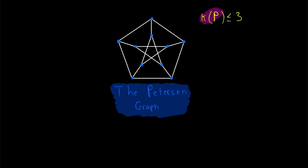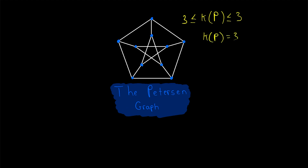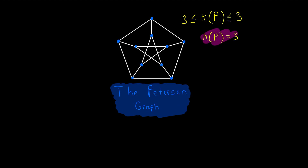The vertex connectivity of the Petersen graph is less than or equal to three. We know that three is enough, but is three the minimum? To show that three is the minimum, we need to show that the vertex connectivity is greater than or equal to three as well — meaning it's necessary to delete at least three vertices to disconnect the graph. This establishes that the vertex connectivity of the Petersen graph is three. Less than or equal to three means that deleting three vertices is enough, and greater than or equal to three means that three vertices is necessary. So it's both necessary and sufficient — it is the vertex connectivity.